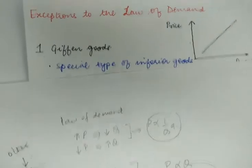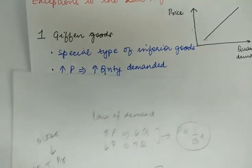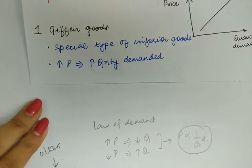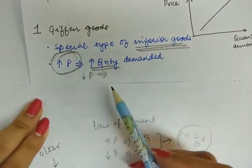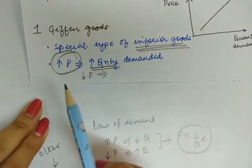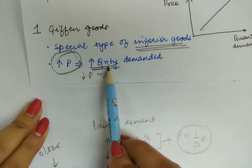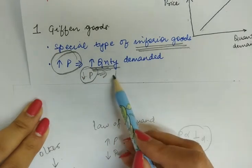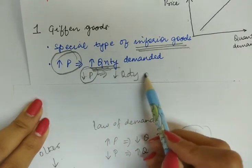The first example is of a Giffen good. Giffen goods are special types of inferior goods such that the increase in the price of the commodity leads to expansion of demand, and the decrease in the price of the commodity leads to contraction of quantity demanded.